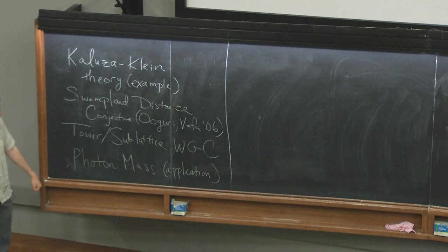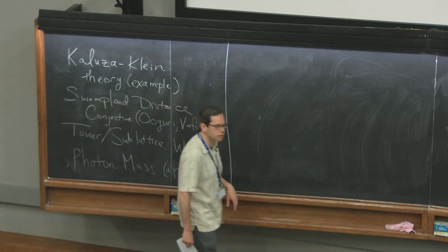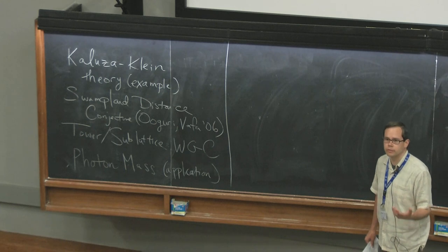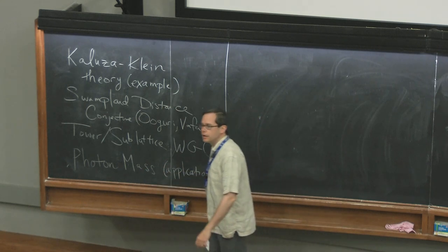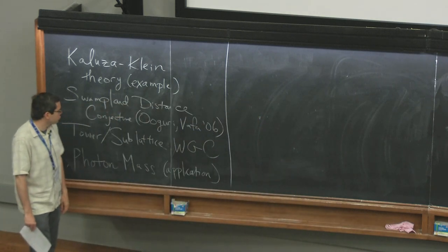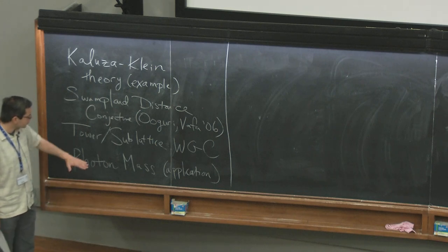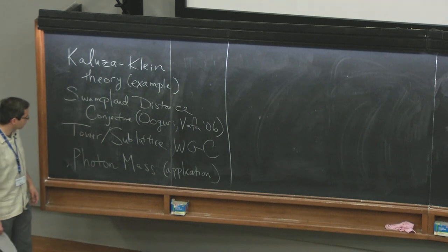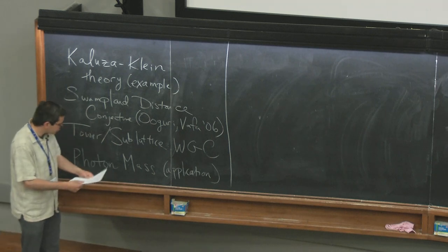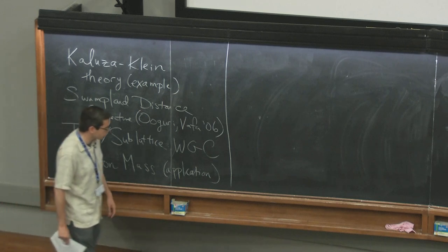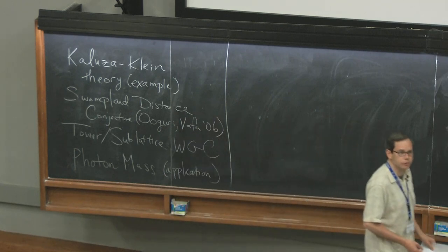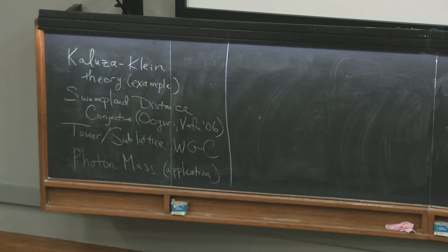Then I'll talk about some stronger formulations of the weak gravity conjecture. Last time I told you that the minimal version is not very phenomenologically useful on its own, because it could just be telling us that there are small corrections to big black holes that make them slightly less massive — not a very useful statement. But we'll see there are stronger conjectures that come closer to saying useful things for real-world physics. At the end, I want to give at least one application: to the question of whether the photon can have a mass.